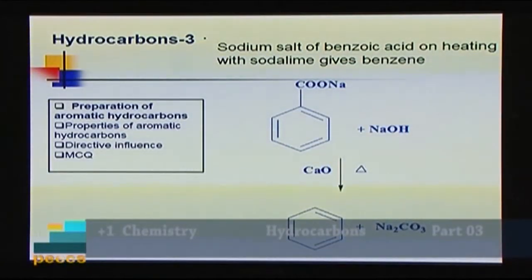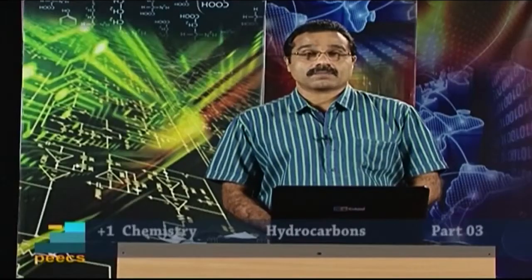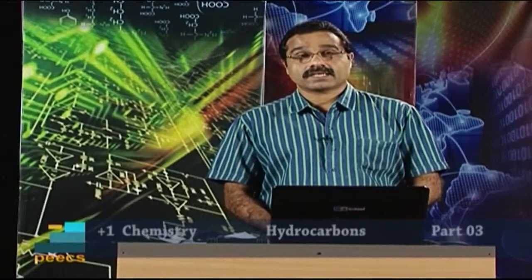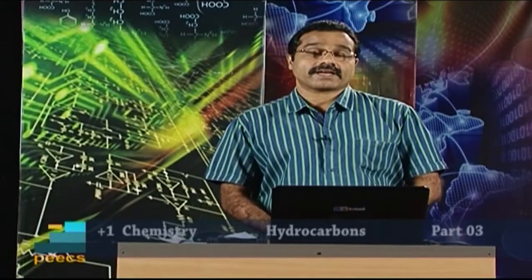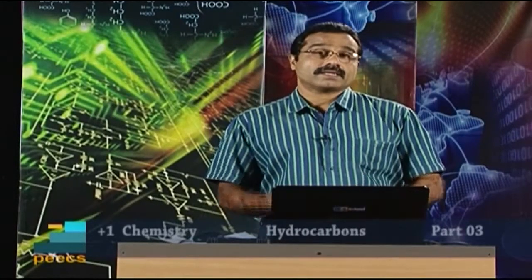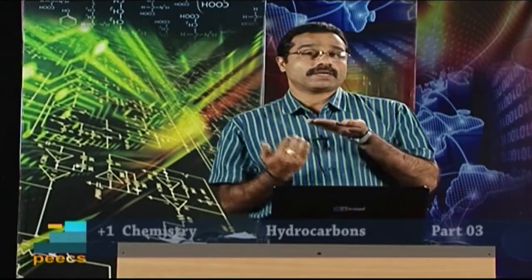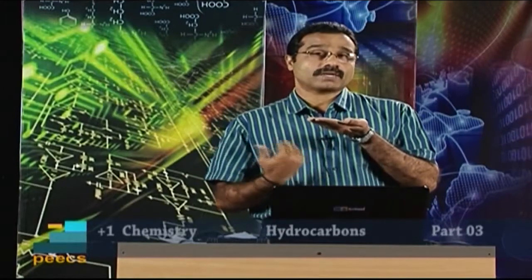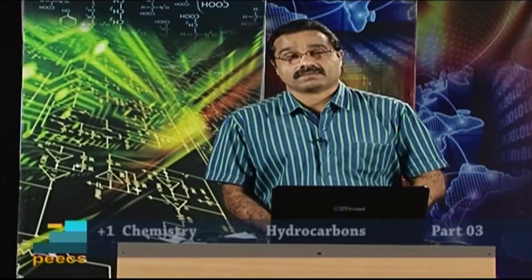Benzene is a flat hexagon of 6 carbon atoms. The carbon atoms and hydrogen atoms lie in one plane, with a pi electron cloud above the plane and also a pi electron cloud below the plane.